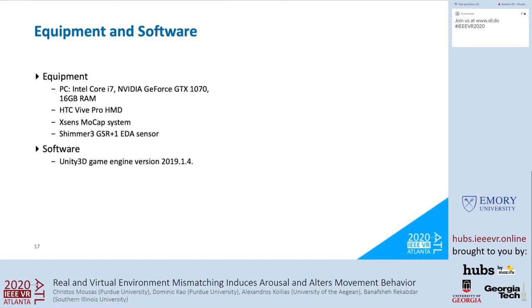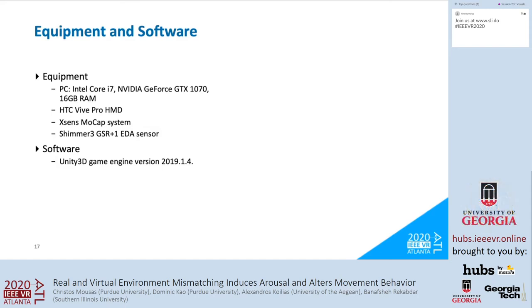The devices used were the MSI VR1 BACA computer for running the VR application, the HTC Vive Pro head-mounted display for projecting VR content, the XS motion capture system for transferring and capturing participant motion, and the Shimmer GSR Plus 1 Electrodermal Activity Sensor for capturing physiological responses. The application was developed in the Unity 3D game engine, version 2019.1.4.